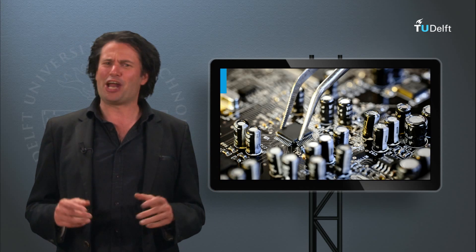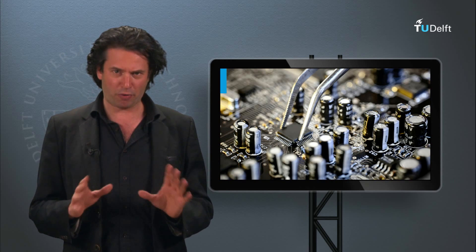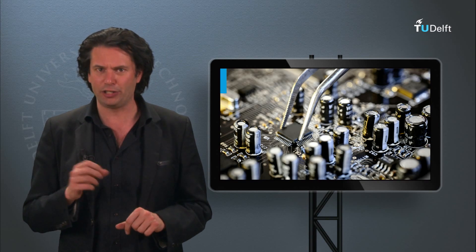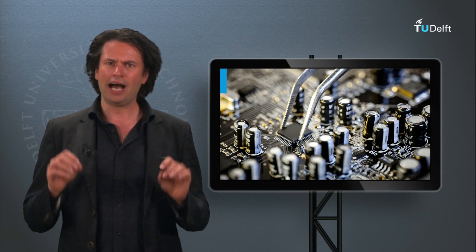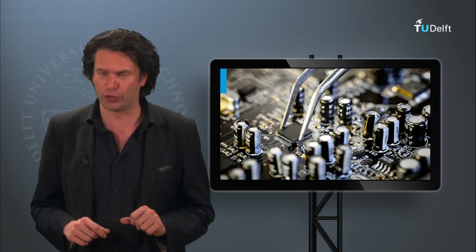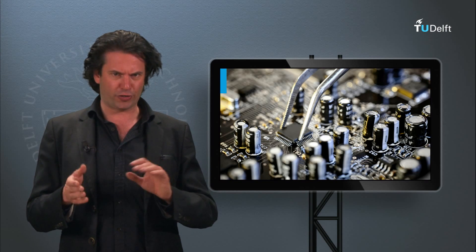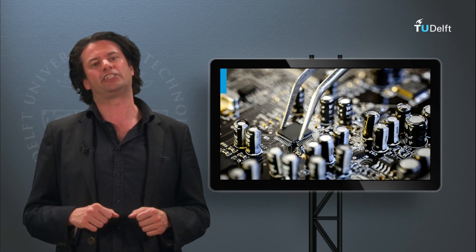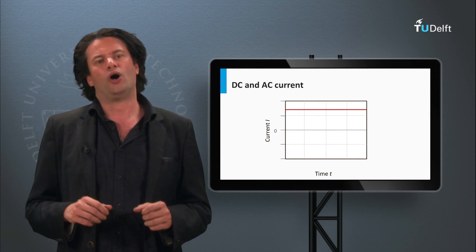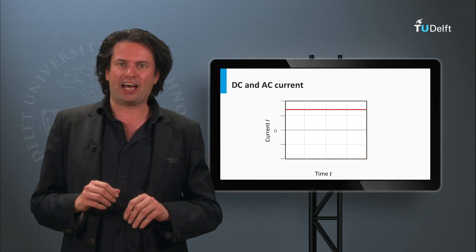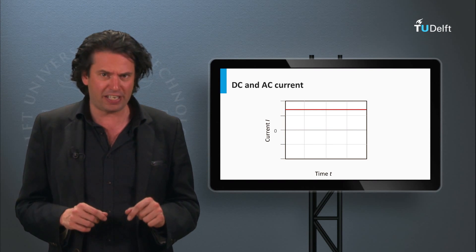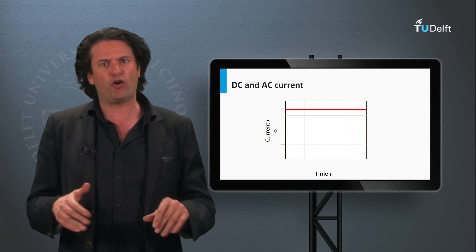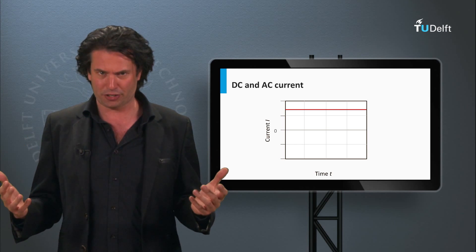Welcome back. Now we come to an important power electronic device that makes the modern PV system widely usable. I am talking about the solar inverter. To know what an inverter is, we must first understand its need in the PV system. All the discussions we have had so far on the PV electrical output in terms of current, voltage and power have all been DC in nature.